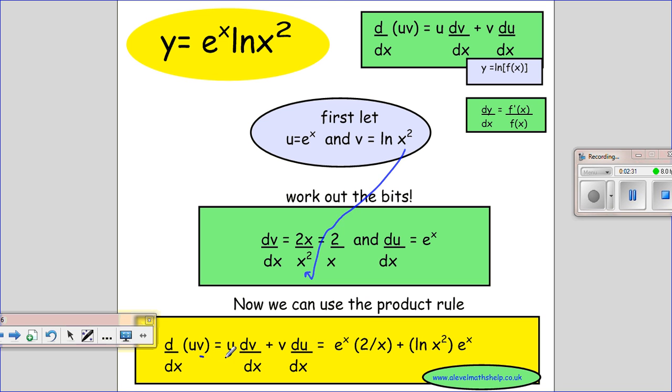And then I just go step by step into here. So I need u, which is e to the x, dv/dx equals 2 over x plus v, which is ln x squared, and du/dx equals e to the x. I could actually just make that look a little bit prettier and write it in a nicer form, but that's how I've left it here.